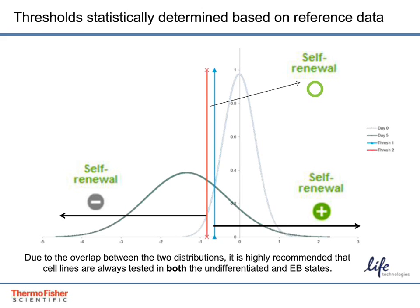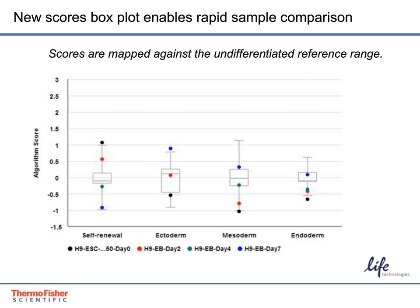Here we show another new data representation. The gray box plots show the range of scores for the 13 lines in the undifferentiated reference set. Box plots are a statistical representation of a range of values: the top whisker represents the maximum value, the bottom whisker the minimum, and the horizontal line in the middle the median. The two whiskers and two boxes represent the four quartiles of values. Four ranges are shown for the four different subpanels within the scorecard plate. Each sample score is plotted in a different color for comparison. Here we display a time course of EB formation, which shows a net decrease in self-renewal gene expression and a net increase in ectoderm, mesoderm, and endoderm gene expression over seven days. This view adds a y-axis and the ability to overlay scores for up to 12 samples on the same graph.